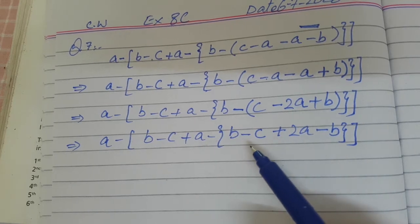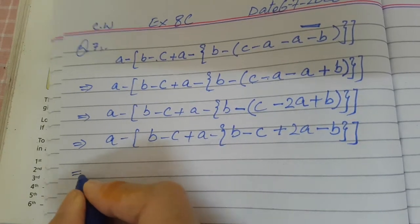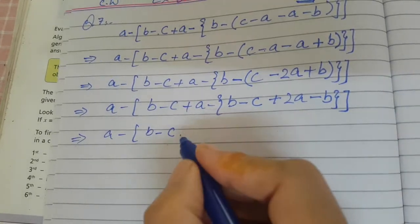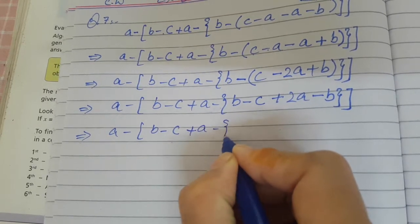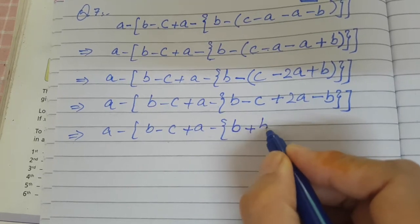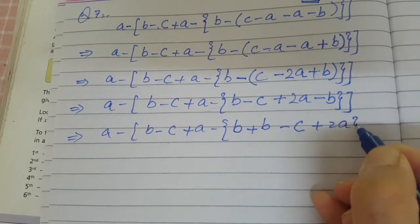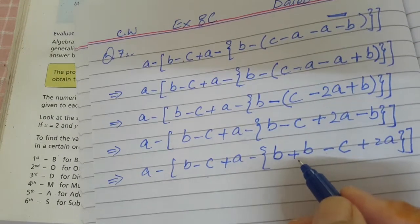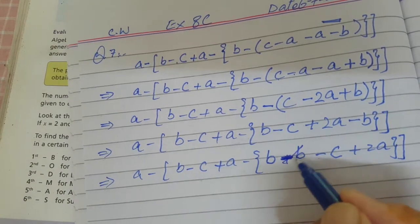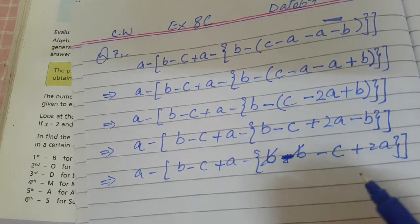Inside the braces, look if any like terms are there. B and minus b is there — plus b and minus b. So plus b and minus b will cancel each other, because 1b and minus 1b: plus minus is minus, 1 minus 1 is 0. So we will cancel both the b's in this step.